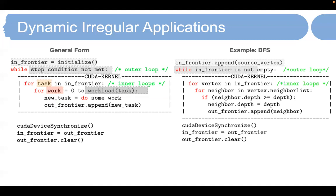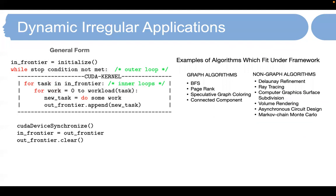The BFS GPU implementation uses a double buffer scheme. At the beginning, we initialize the in-frontier by the source vertex. Then on the CPU side, we have a while loop which launches CUDA kernels onto the in-frontier until the in-frontier is empty. Inside the kernel, the vertices in the in-frontier are processed in parallel, and for each vertex, its neighbors are visited. If that neighbor has not been visited before, it will be added to the out-frontier. When all vertices are processed, the CUDA kernel exits and the out-frontier becomes the new in-frontier for the next iteration. Besides BFS, this general form works for other graph algorithms such as PageRank or graph coloring, and also works for non-graph algorithms such as Delaunay refinement or ray tracing.